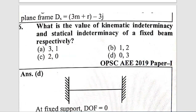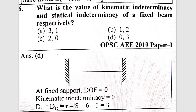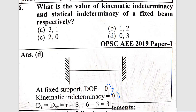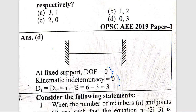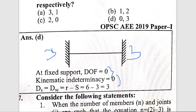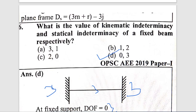Question 6: What is the value of kinematic indeterminacy and static indeterminacy of a fixed beam respectively? A fixed beam has degree of freedom = 0, so kinematic indeterminacy = 0. For static indeterminacy, the formula gives 3, so static indeterminacy is 3. The correct answer is option D: kinematic = 0, static = 3.